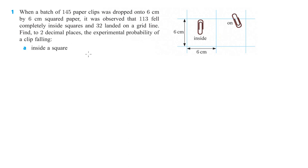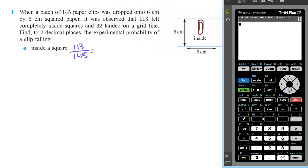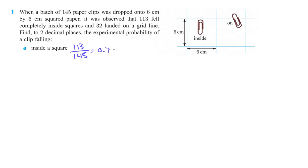So, the number that fell inside the square was 113 out of a total 145. So we will just calculate that out. We do 113 divided by 145, and that gives us 0.779. So let's round that off to 0.78, which is 78%, whichever one you want.